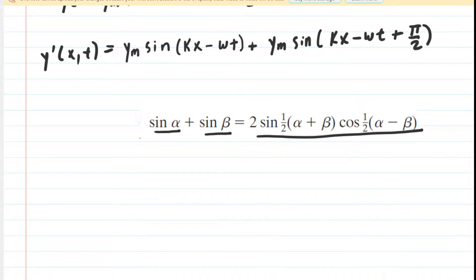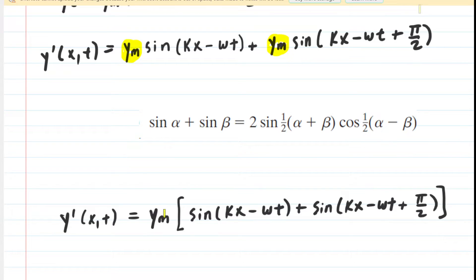Before we even do that, we might notice that in simplifying this equation, we have a common factor of y_m. So we're going to factor that out. We have factored out the y_m, leaving us with the sum of these two sine functions.